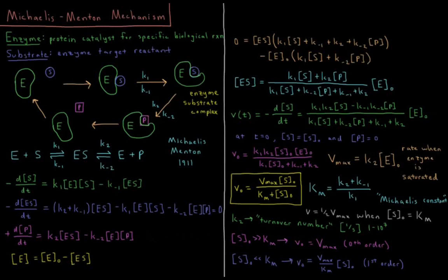This video will discuss the Michaelis-Menten mechanism of enzyme kinetics. An enzyme is a protein catalyst for a specific biological reaction, and the substrate of this enzyme is the reactant which is the target for that enzyme. We can describe enzyme catalysis as occurring in a cyclical mechanism, with an enzyme and a substrate both dissolved in aqueous solution, perhaps inside the cell of some organism.